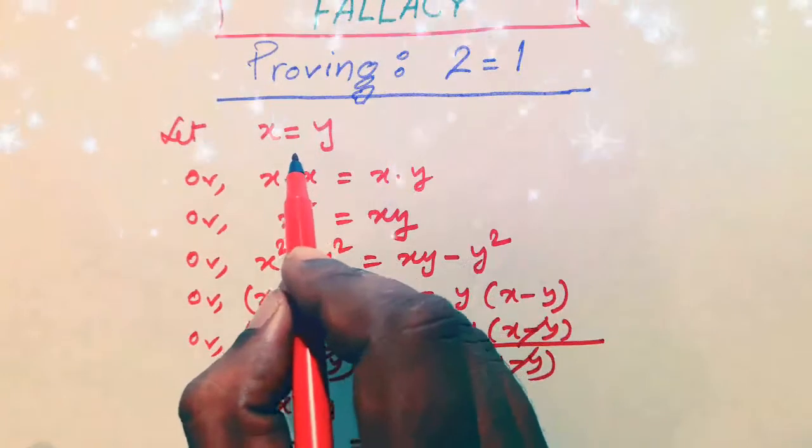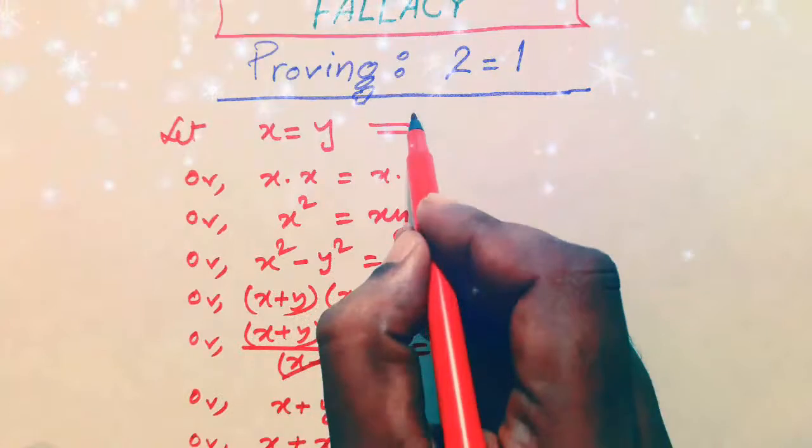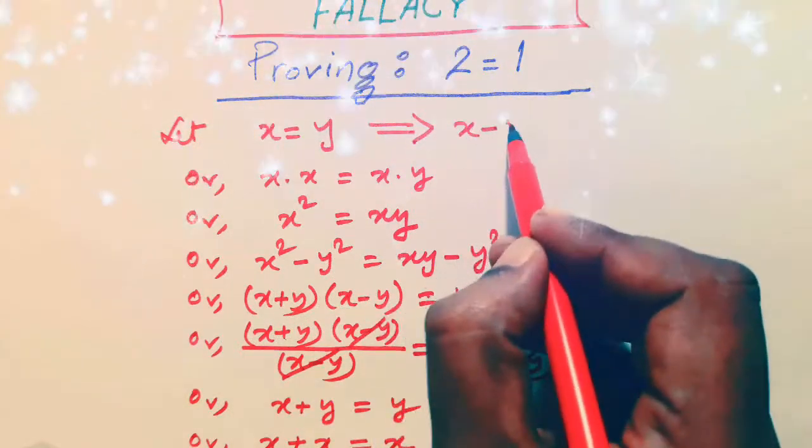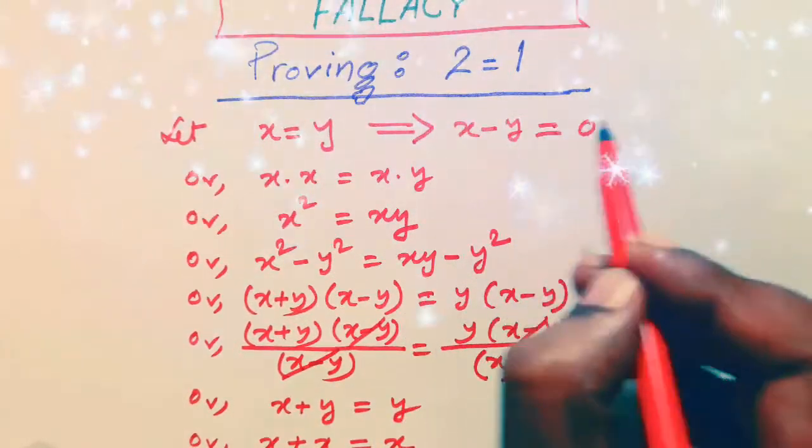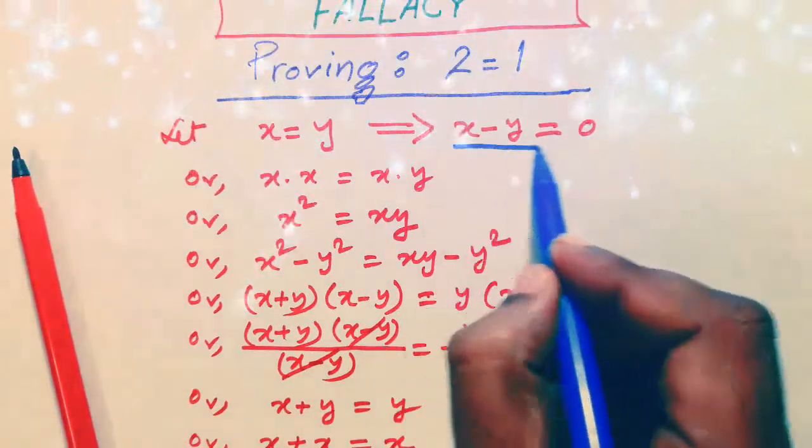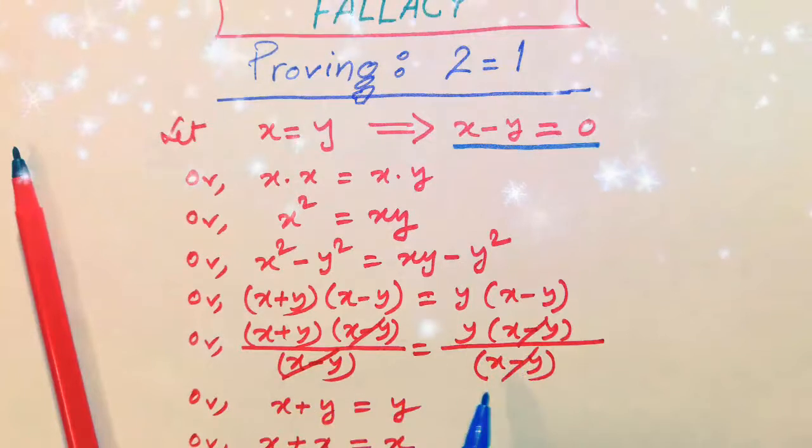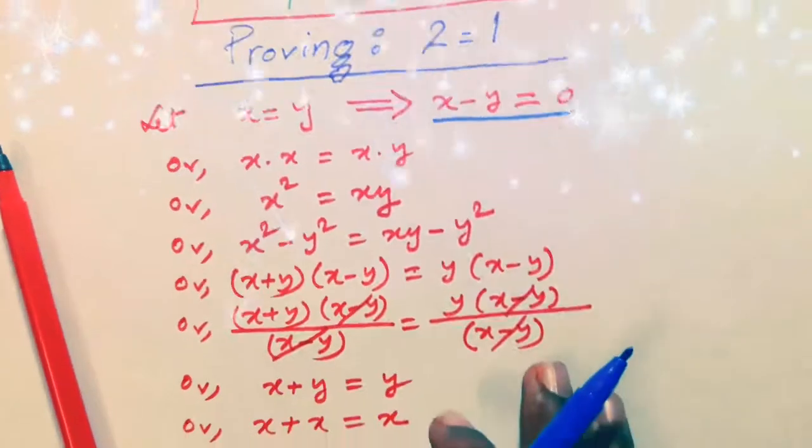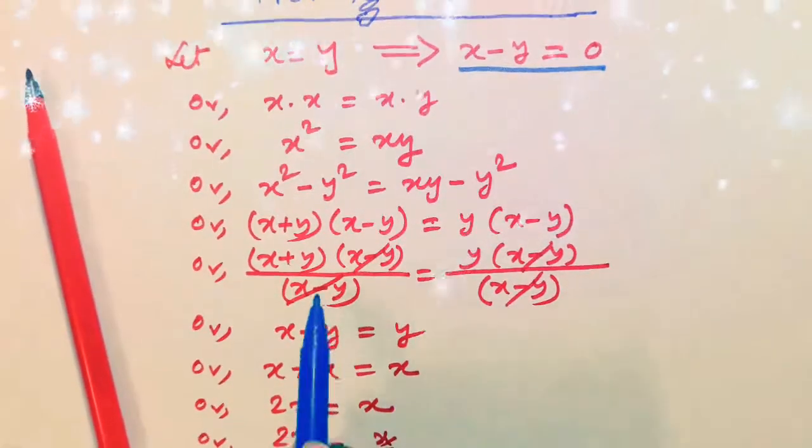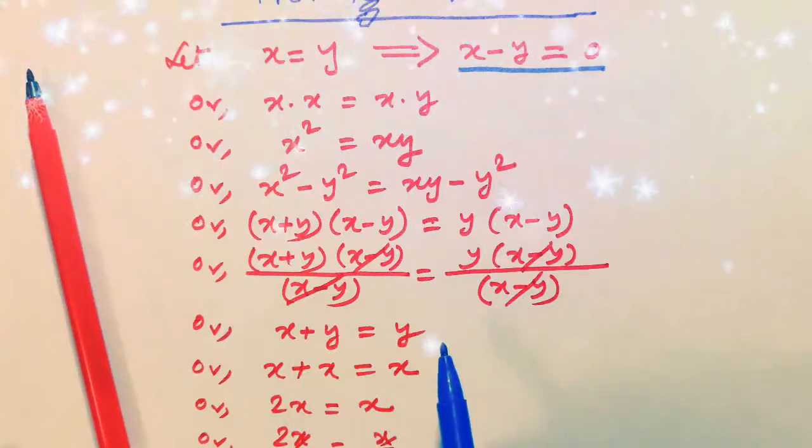Friends, at the very beginning, we have considered x is equal to y. From this one, we get x minus y is equal to 0. So in this term, we observe we have divided both sides by x minus y. That means we have divided both sides by actually 0. No number can be divided by 0 such that it will be undefined.